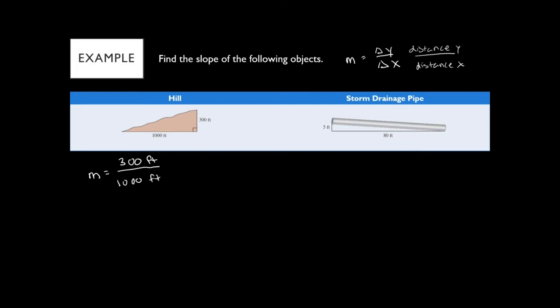Units are really important when you have real-life situations. In this case, the units cancel — feet over feet — so our answer has no units. It would be 300 over 1000, which reduces to 3 over 10. So the slope is 3/10.